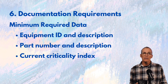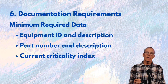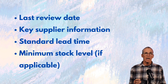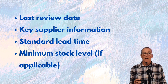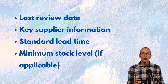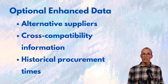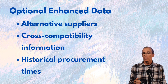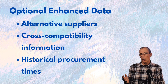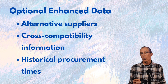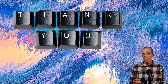Key data fields to track include: Equipment ID, description, part numbers, current criticality index, last review date, key supplier, lead time, and minimum stock levels. Optional data includes alternate suppliers, cross-compatibility notes, and historical procurement times if you've run into issues.